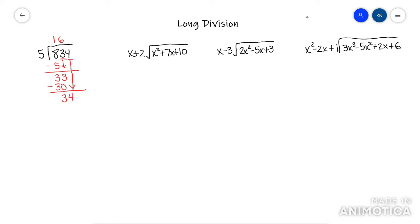And then you repeat. 34 divided by 5 is 6. Multiply this 6 times the 5, that is 30 and you subtract. 4. When you run out of numbers, that means this is your remainder. So my remainder here is 4 out of 5.